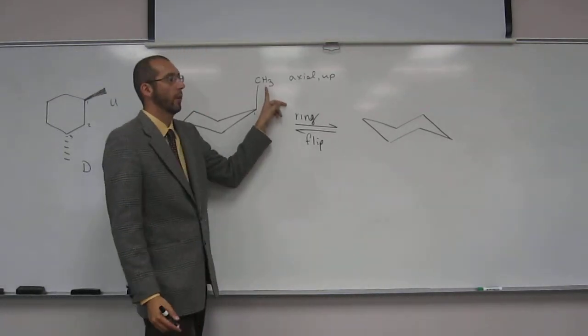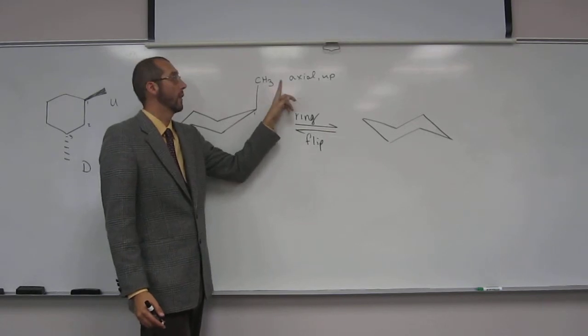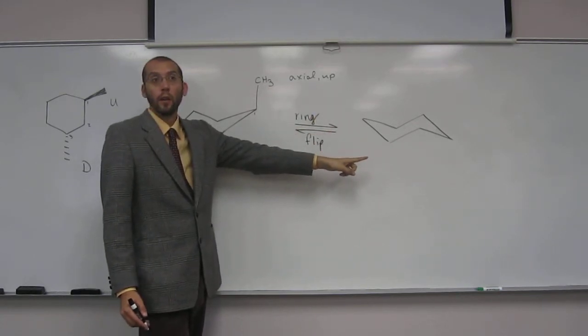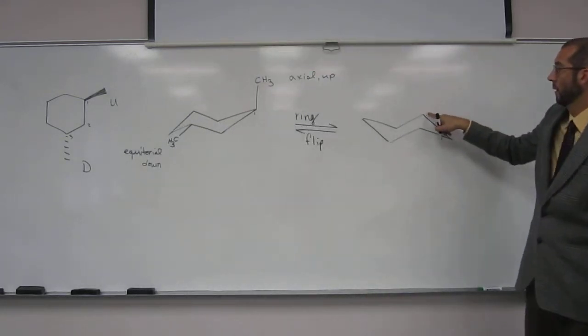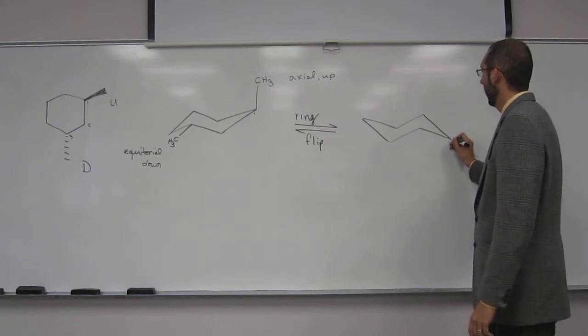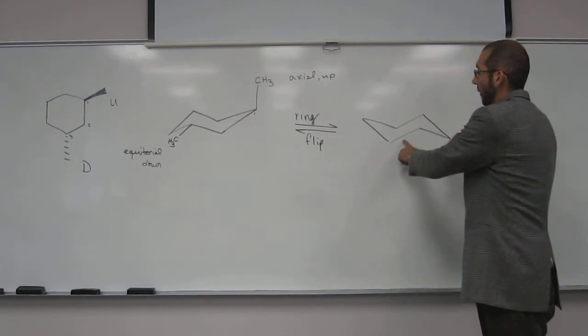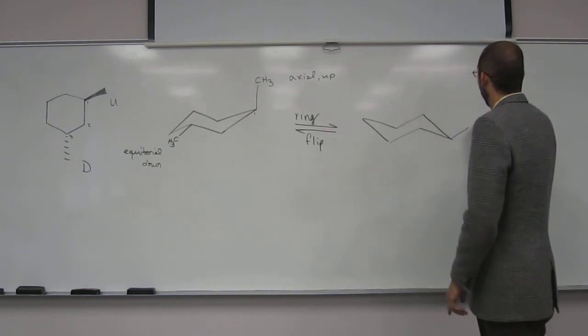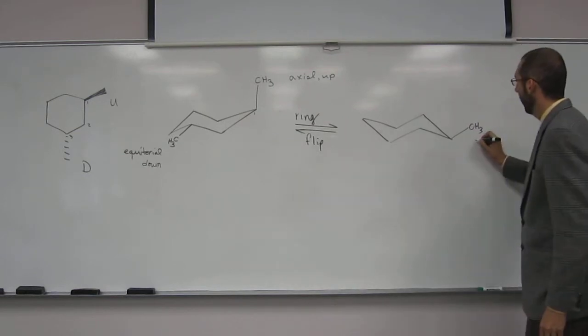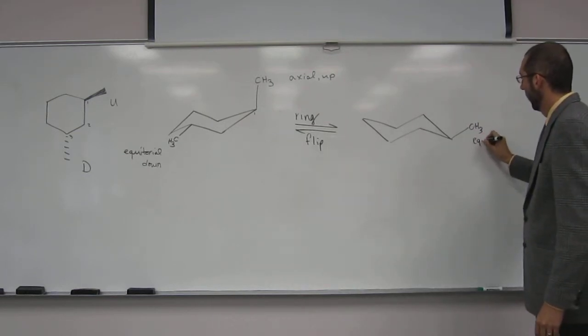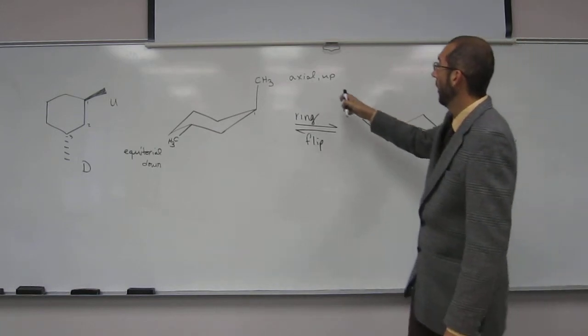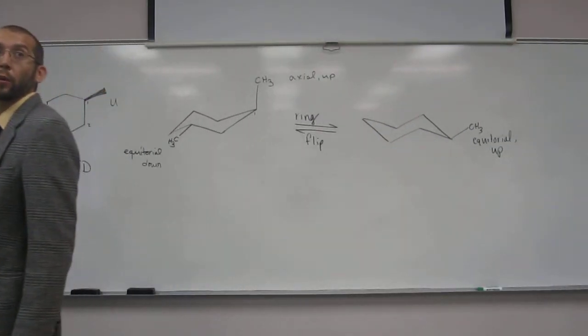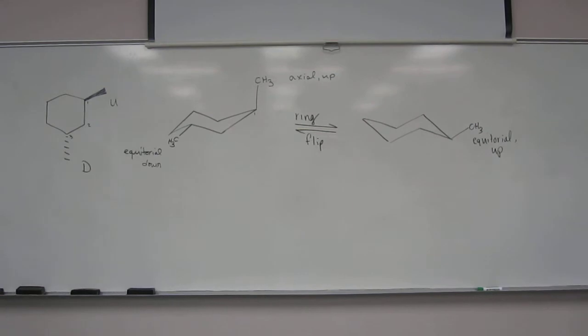So what's this methyl group going to be? Where is it going to be? If it's this here, it's going to be equatorial up. Up, right. And where are we going to put it? Here? No. Where? There. Okay. So, and it's going to be parallel to that line there. And what did we say again? It was what? Equatorial. So again, notice, the up didn't change when we ring flipped. So it's just the equatorial axial changes.